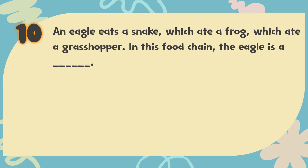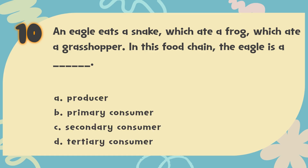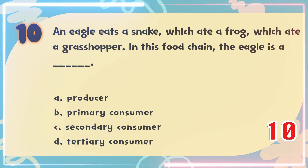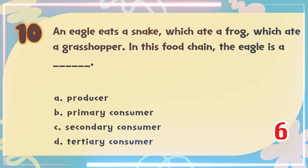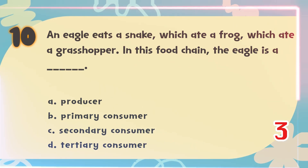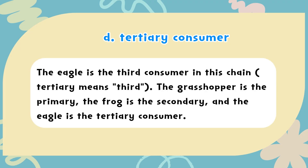Number 10. An eagle eats a snake, which ate a frog, which ate a grasshopper. In this food chain, the eagle is a blank. The choices are: A. Producer, B. Primary Consumer, C. Secondary Consumer, D. Tertiary Consumer. The correct answer is D. Tertiary Consumer. The eagle is the third consumer in this chain — tertiary means third. The grasshopper is the primary consumer, the frog is the secondary consumer, and the eagle is the tertiary consumer.